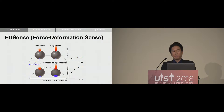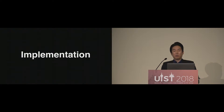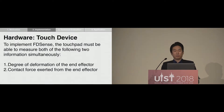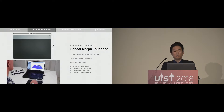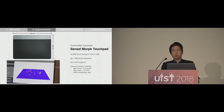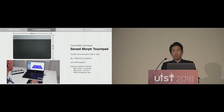Our proposed touch technique, FDsense, estimates the Young's modulus and stiffness of the ND vector by simultaneously observing the applied force and the deformation of the ND vector. In particular, FDsense estimates elasticity by measuring the degree of deformation of an object as a change in contact area. FDsense can be implemented on a commodity touchpad. To implement FDsense, the touchpad must be capable of simultaneously measuring the applied force and the degree of deformation of the ND vector. The sensor-morphed commodity touchpad satisfies both of these conditions, and we implemented FDsense on it without any additional hardware.